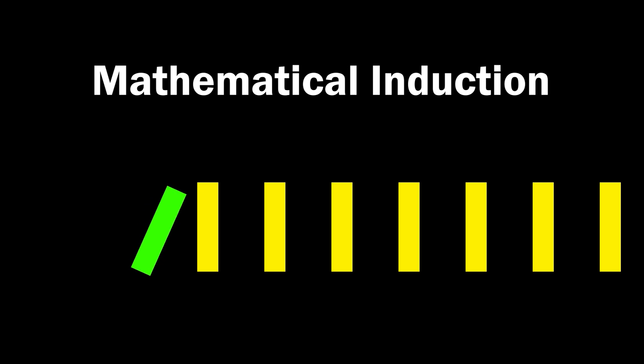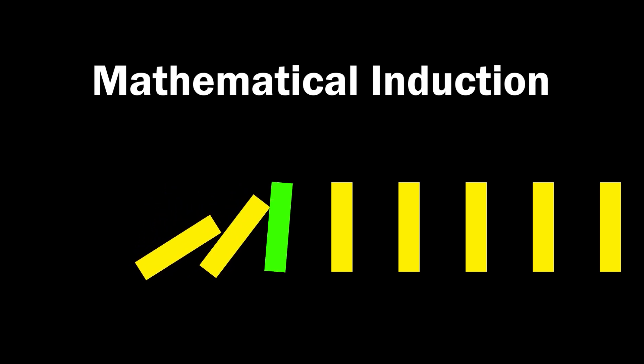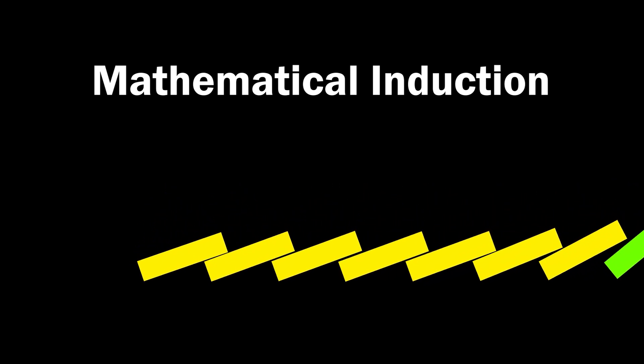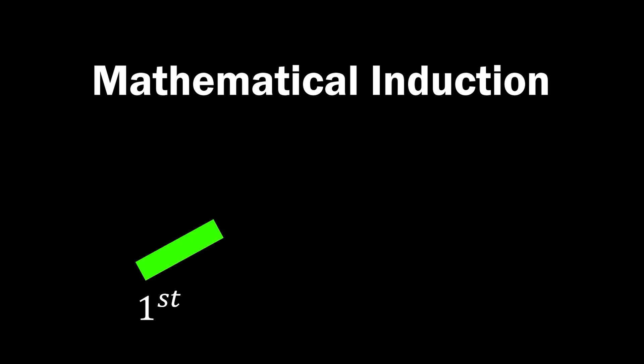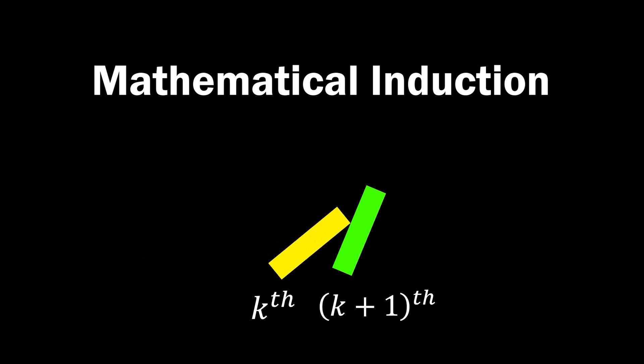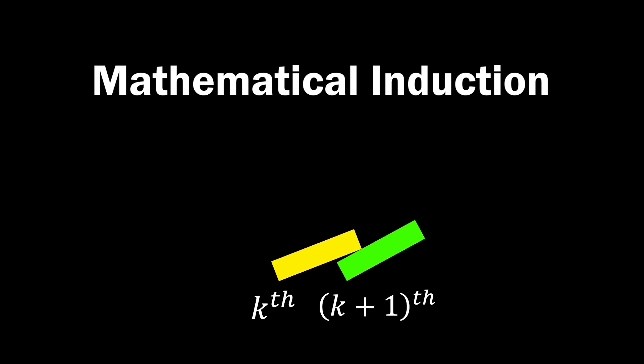Mathematical induction is a method similar to knocking down all the dominos, where the first domino must fall, and when the kth domino falls, the next one — the k plus 1th domino — must fall immediately.